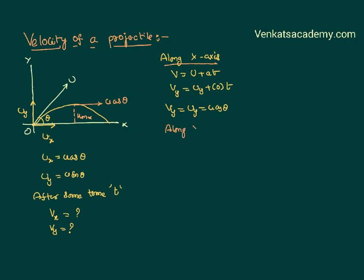Now let us talk about along y axis. I will use the same formula. Final velocity is initial velocity plus at. Vy is uy, a is minus g and t. uy is u sin theta minus gt. So I know the velocity along y axis also.